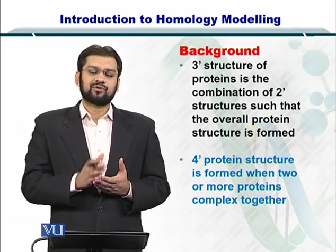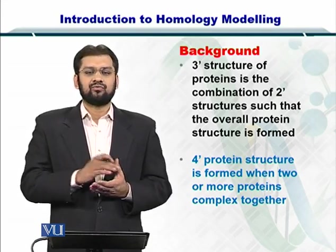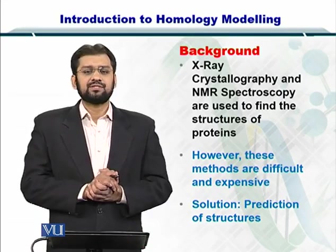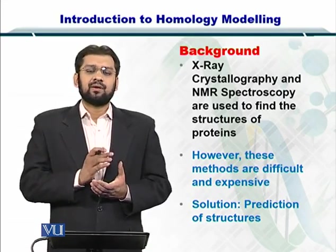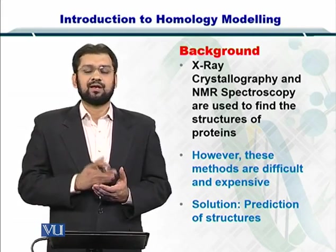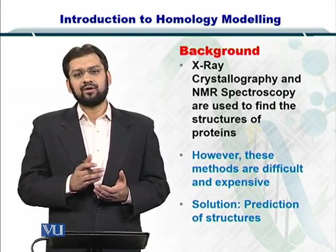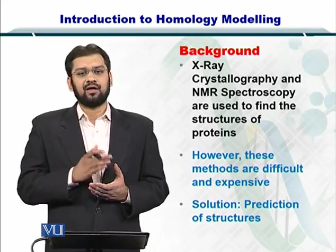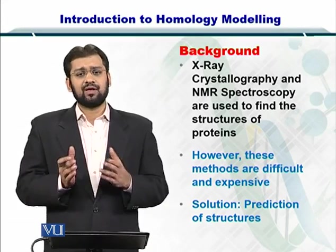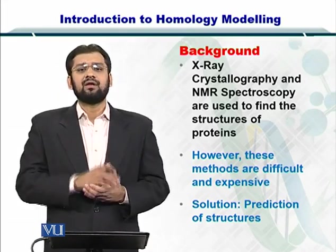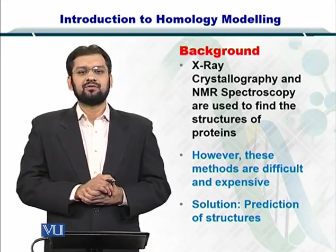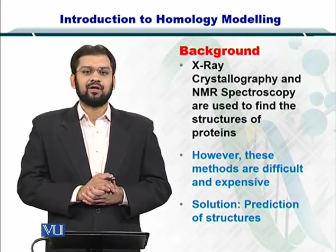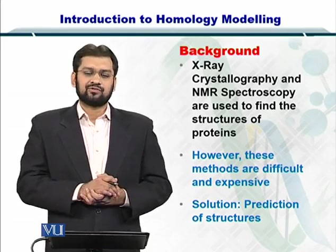So these four types of structures exist for different proteins. As just mentioned, the experimental determination of these structures is very difficult and expensive. However, two strategies exist: X-ray crystallography and NMR spectroscopy, in which you can use proteins and find out their three-dimensional structure. However, since they are difficult and very expensive, bioinformatics comes to the rescue.